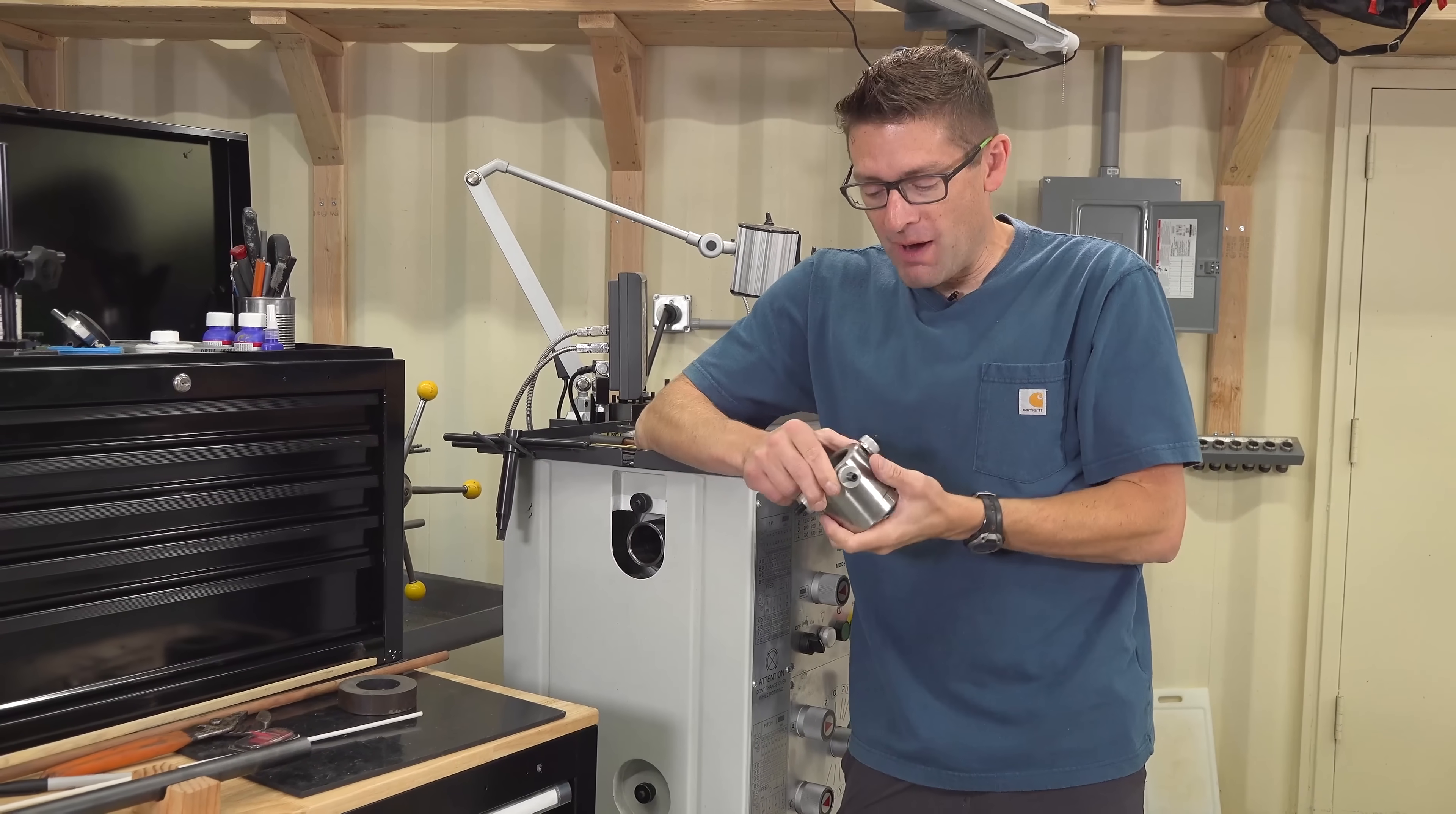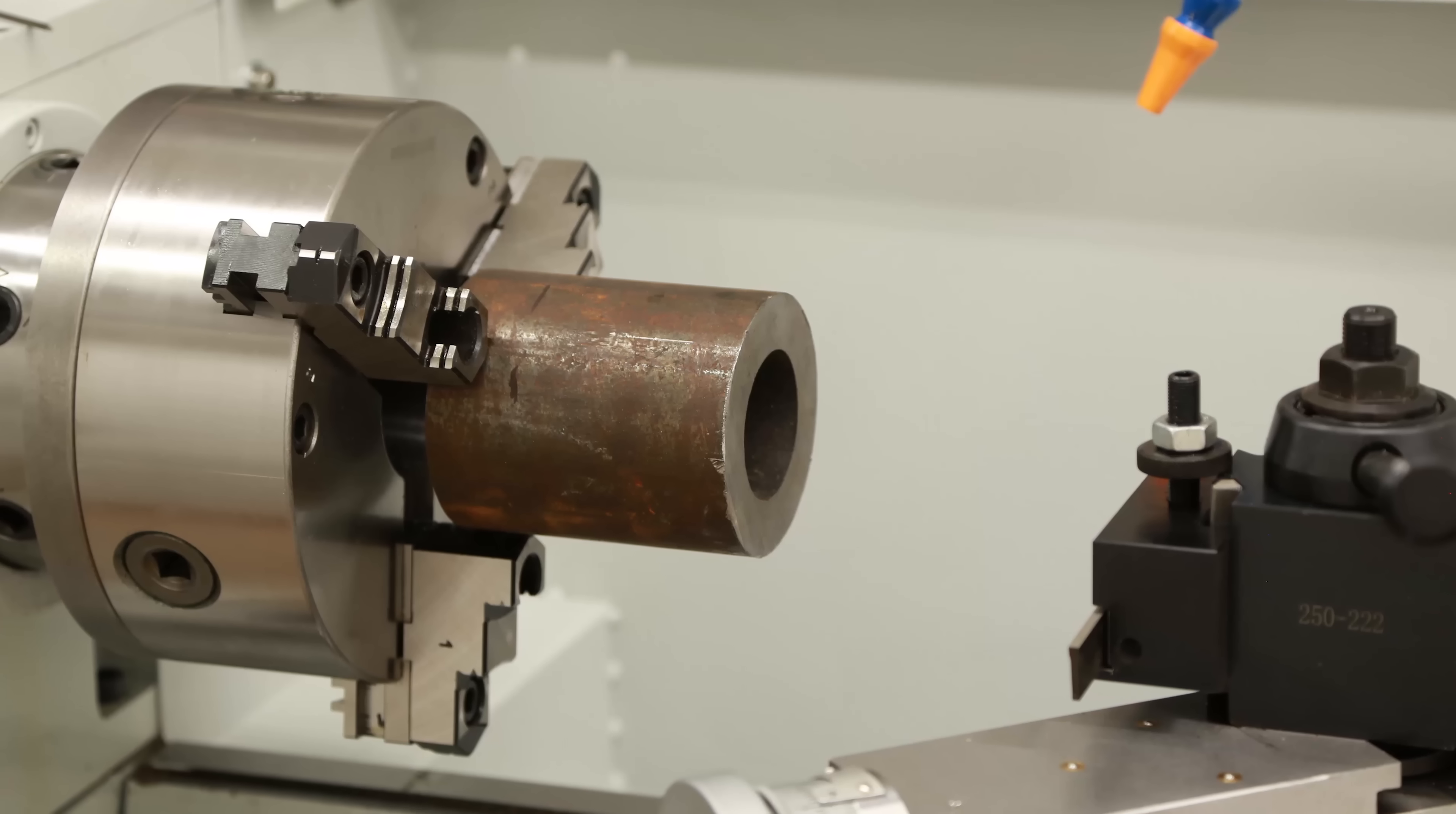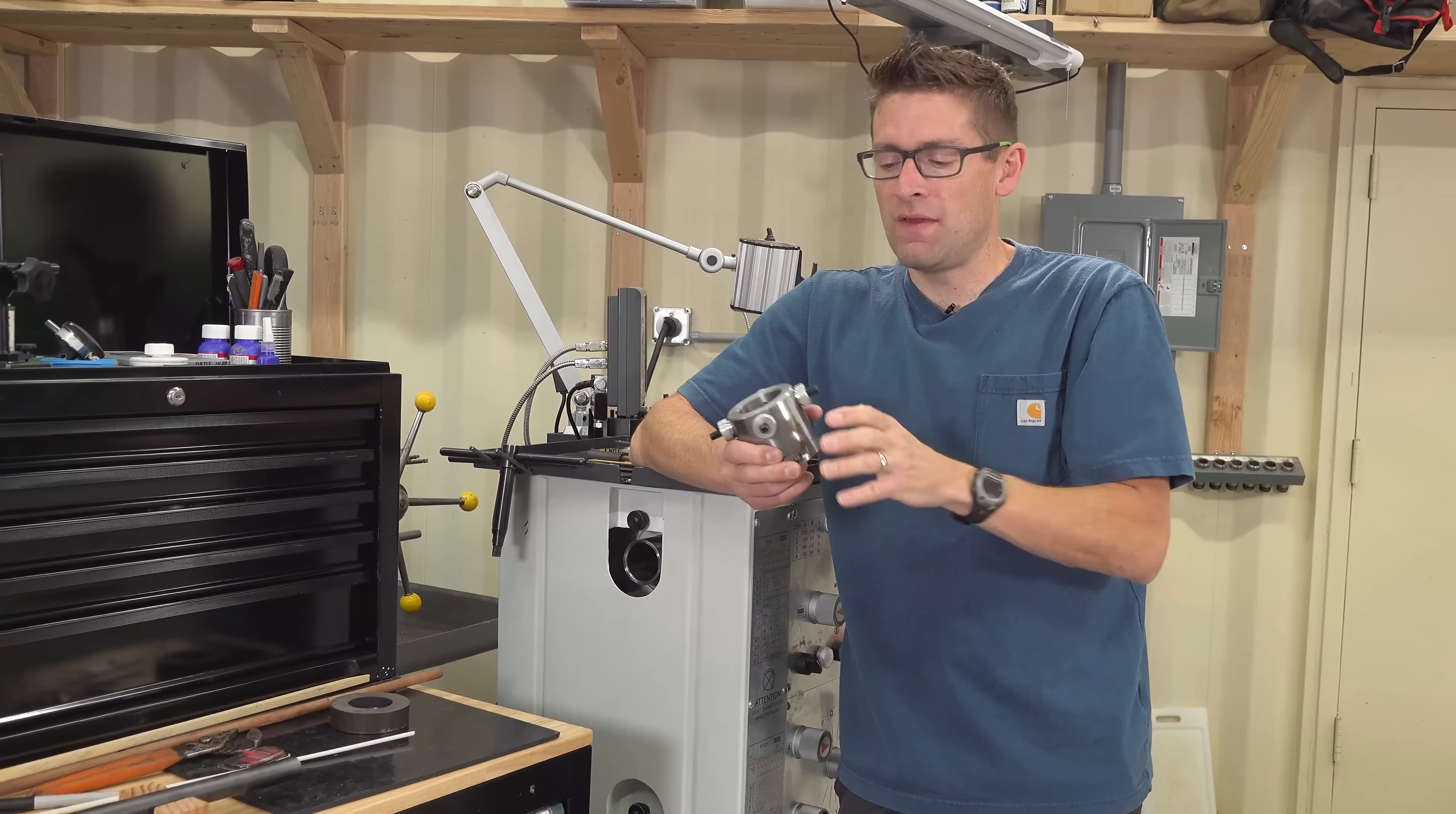So I started with the drawn over mandrel tubing. It was chucked up in the PM 1440 GT and I did two operations to start with: facing the end and turning down the outside diameter.